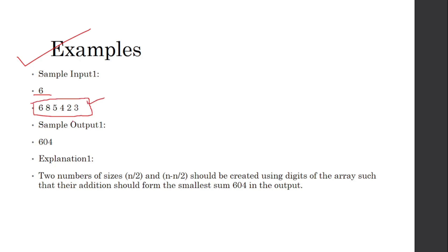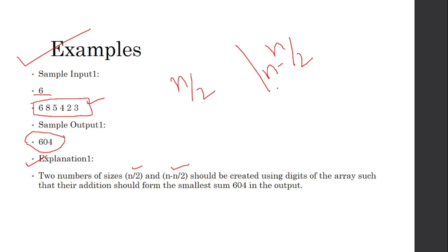The two numbers together should include all the digits of the array. In the first example, the output is 604. The sizes of the two numbers are n/2 and n minus n/2 — meaning you divide the array into two equal parts — such that their addition forms the smallest possible sum. So you have to give the smallest sum.